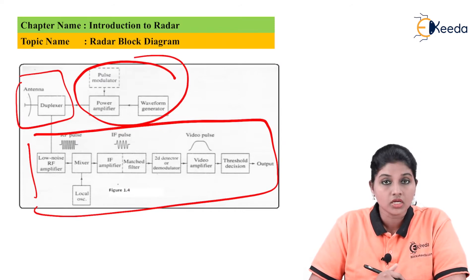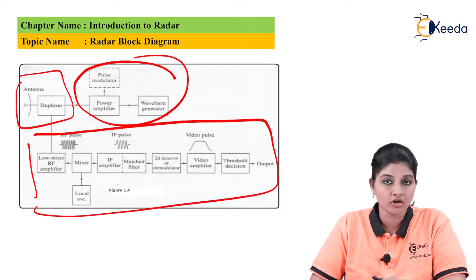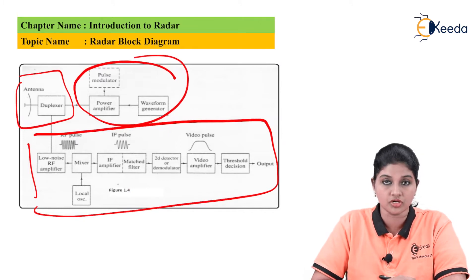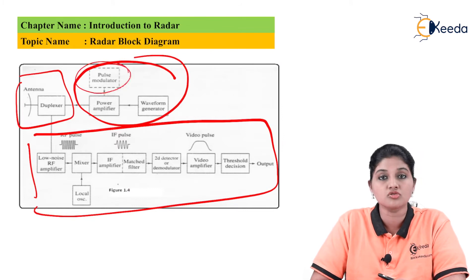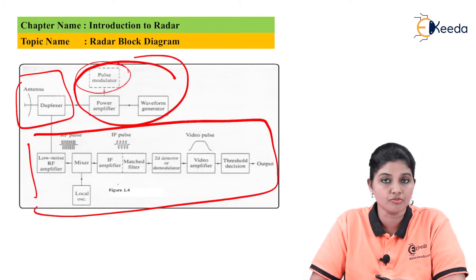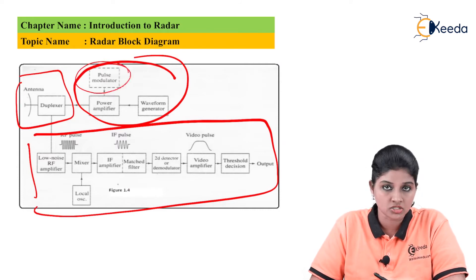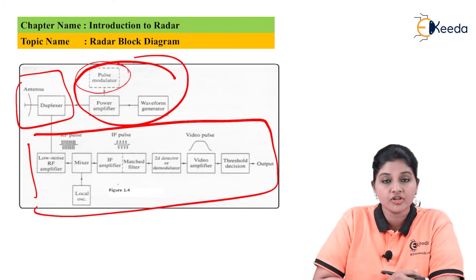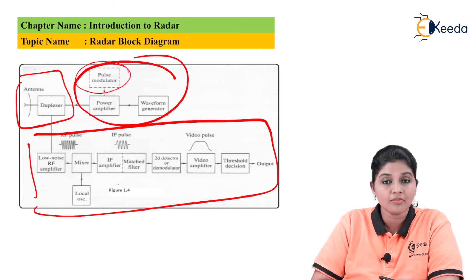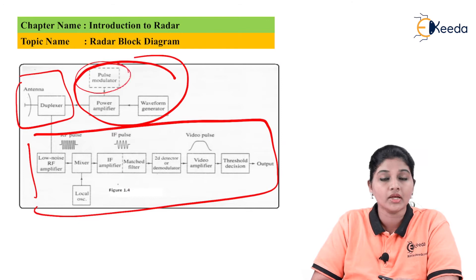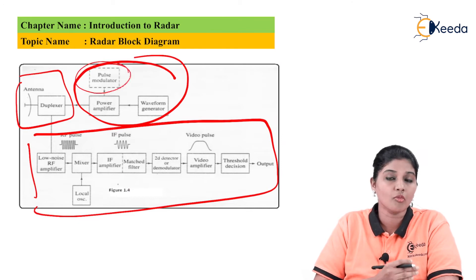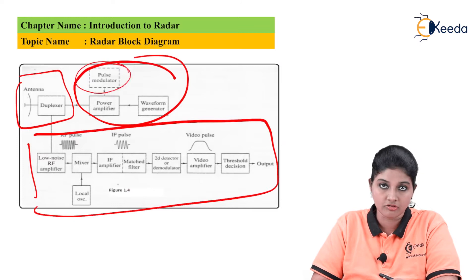In the transmitter section, a carrier signal is generated and modulated using short rectangular pulses produced by the waveform generator. The function of the pulse modulator is to turn on or turn off the modulation depending upon the sequence of input pulses received. Therefore, the pulse modulator basically acts as a switch. The waveform generator produces pulses at very low power, and the power amplifier modulates the signal by turning on or off the modulators depending upon the input signal.